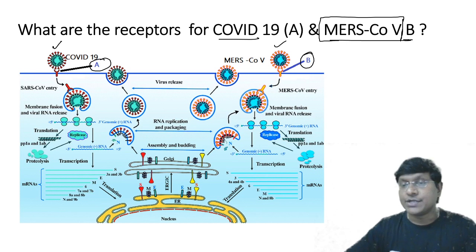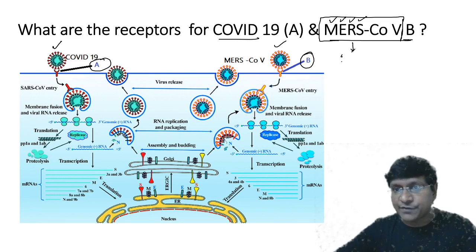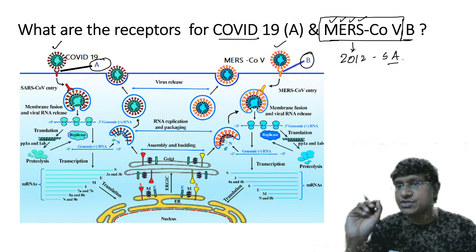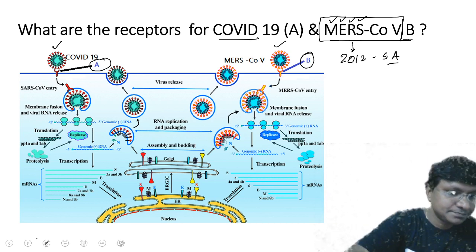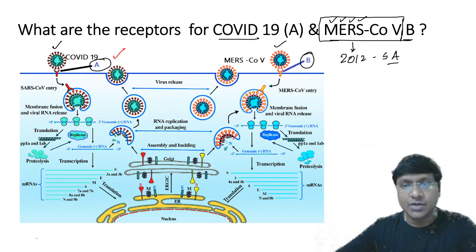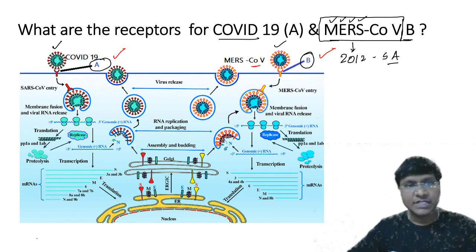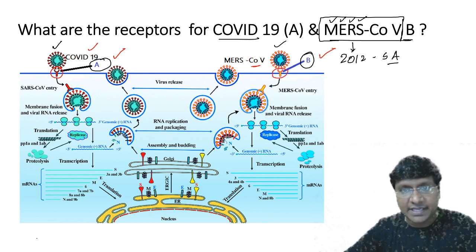MERS is Middle Eastern Respiratory Syndrome — it was initially detected in 2012 in Saudi Arabia. Now my question: what is receptor A for COVID-19 and what is receptor B for MERS coronavirus?